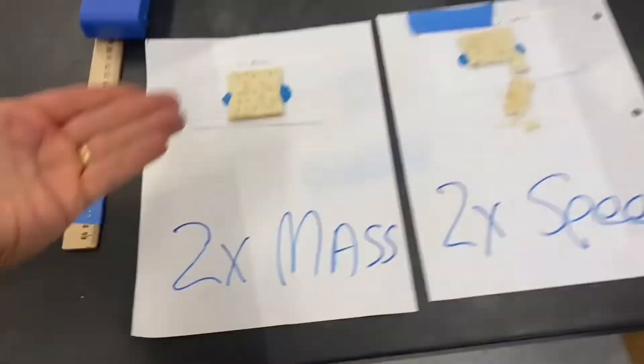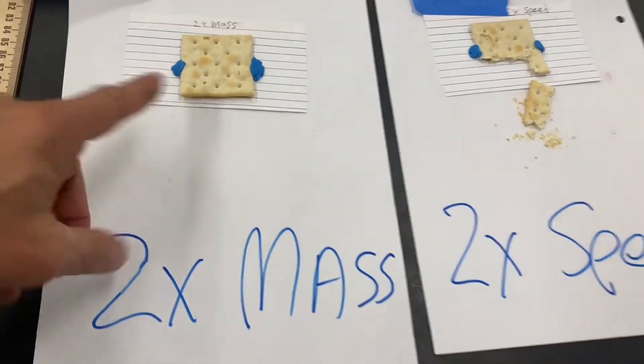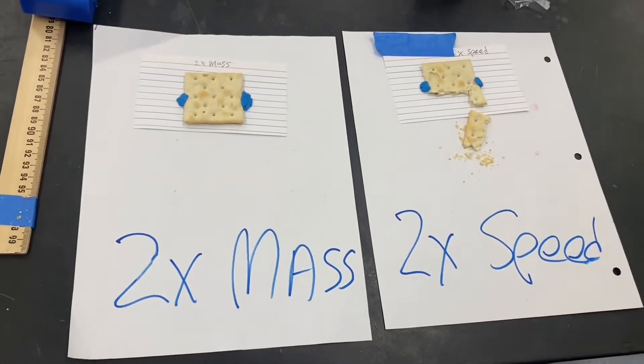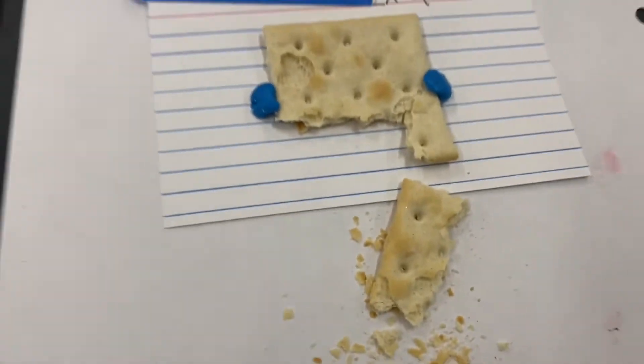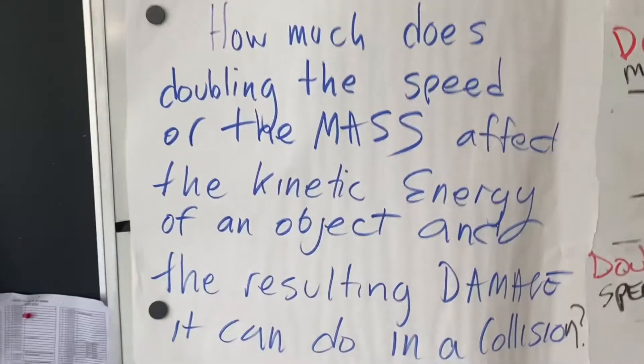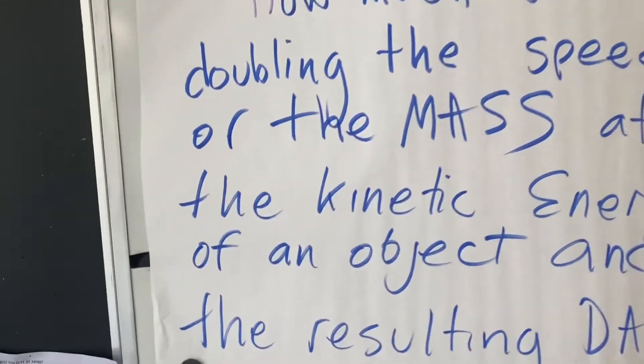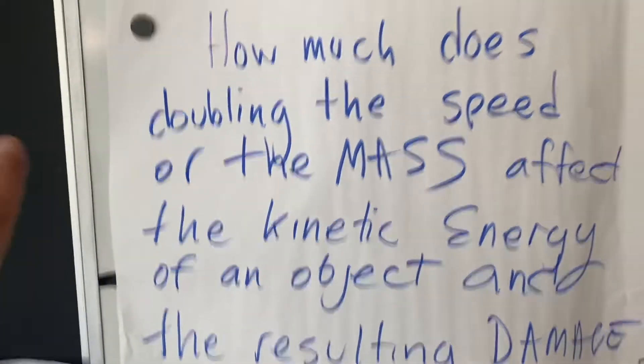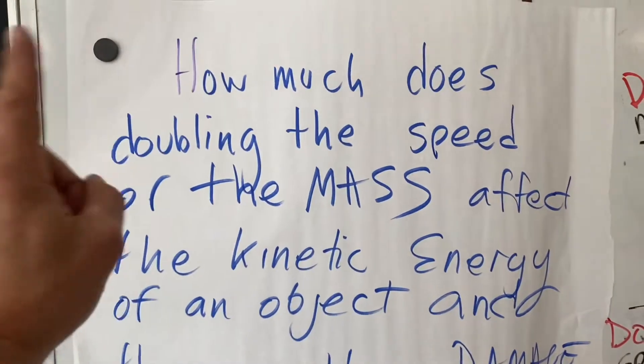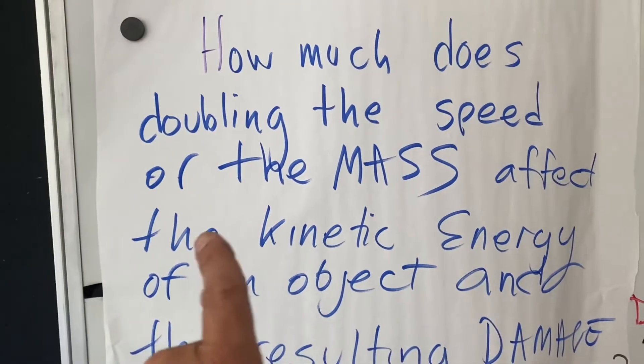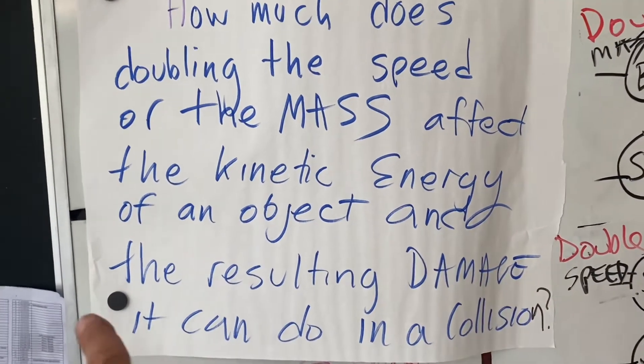Mr. Farrell, what do we see? So we got our 2x mass. We can see not a lot of damage done to that cracker right there, just a little bit. And our 2x speed clearly smashed that cracker up good. So now we have sort of rough evidence, a cracker getting damaged, that will help us answer this question. How much does doubling speed or mass affect the kinetic energy of an object and the resulting damage it can do in a collision? So think about that and be ready to offer an answer. Thanks. I'll see you next time.